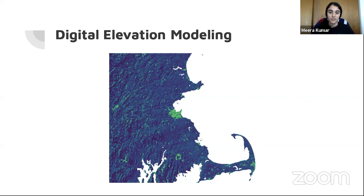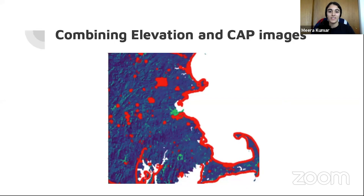Here you can see the digital elevation model of the affected area, with thousands of red dots all over it corresponding to the locations of the CAP imagery. With this, responders can learn more about the terrain in and around the photographed areas and can gain a lot of situational awareness for when they're on scene. With the help of our tool, they'll be able to better respond to the crisis and help more people.